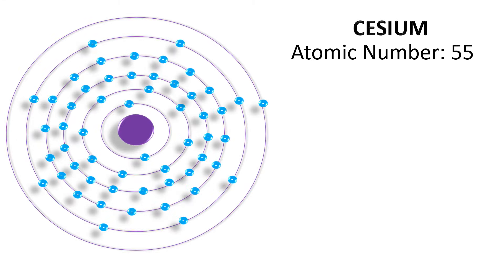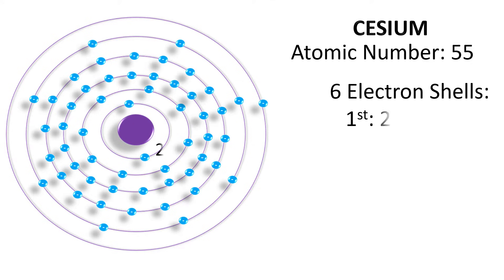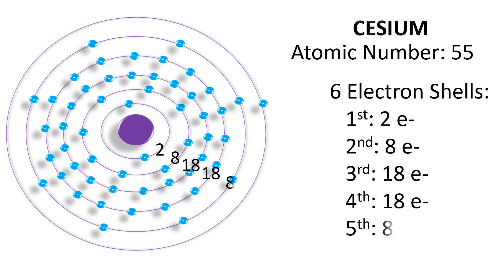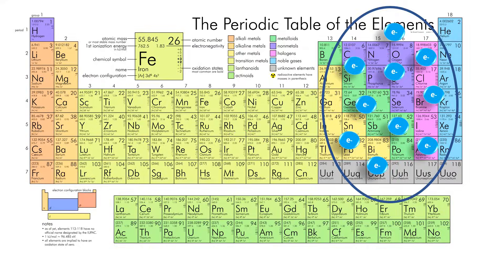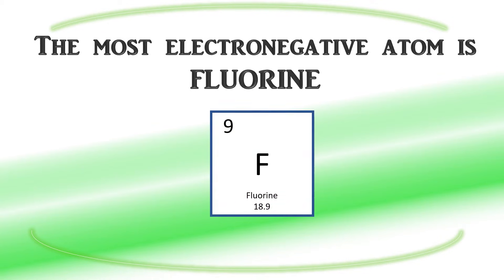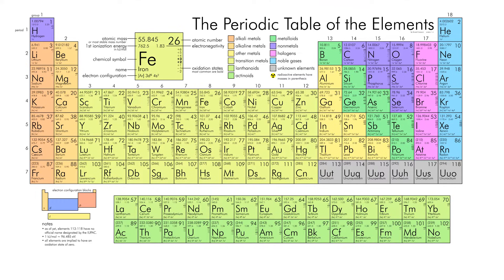Cesium, which has an atomic number of 55, has a similar situation with its outermost shell. It would rather get rid of its outermost electron than satisfy the octet rule. So you can see that francium and cesium are not attracted to electrons. On the other side of the periodic table, elements have a tendency to gain electrons so that they can fill their outer electron shells and become more stable. The most electronegative atom is fluorine, and you can see how fluorine is on the right side of the periodic table.